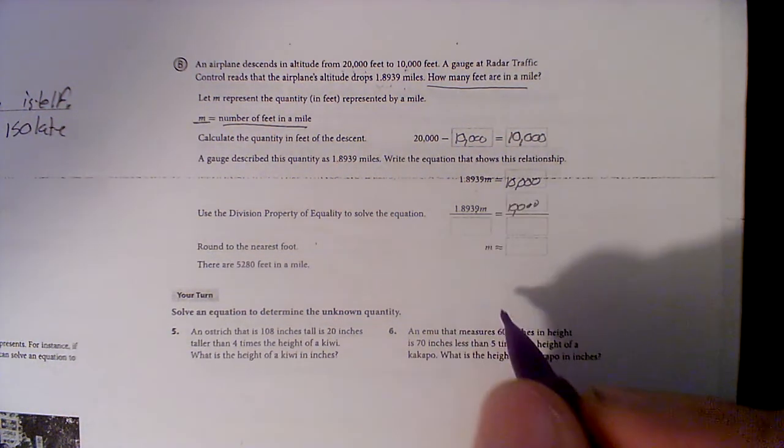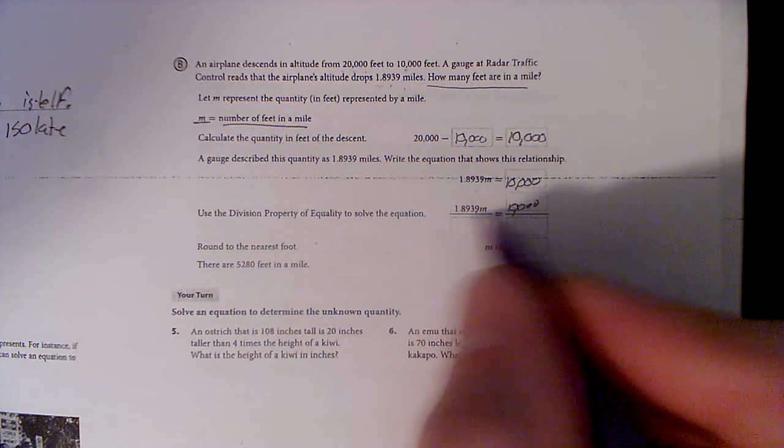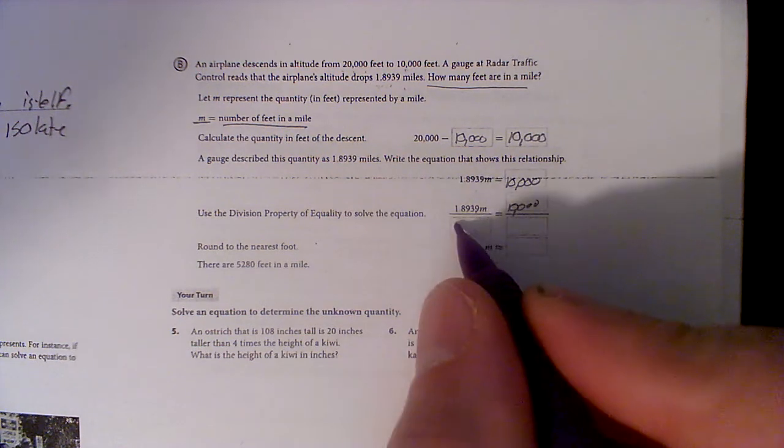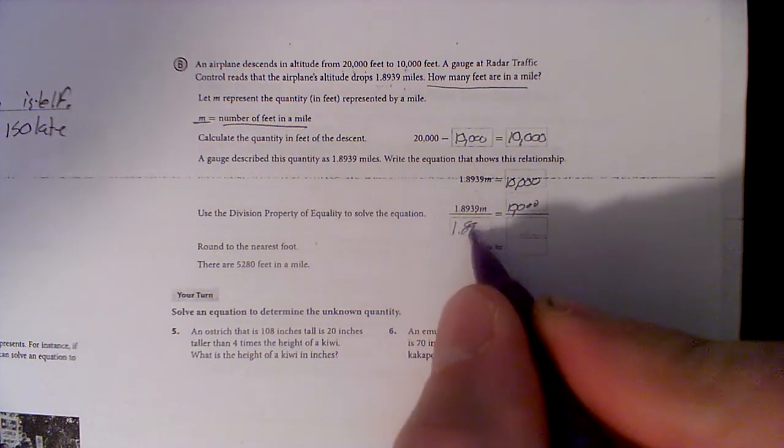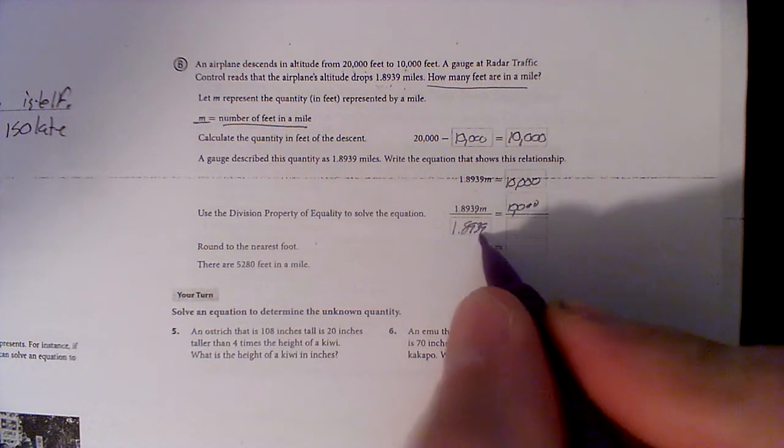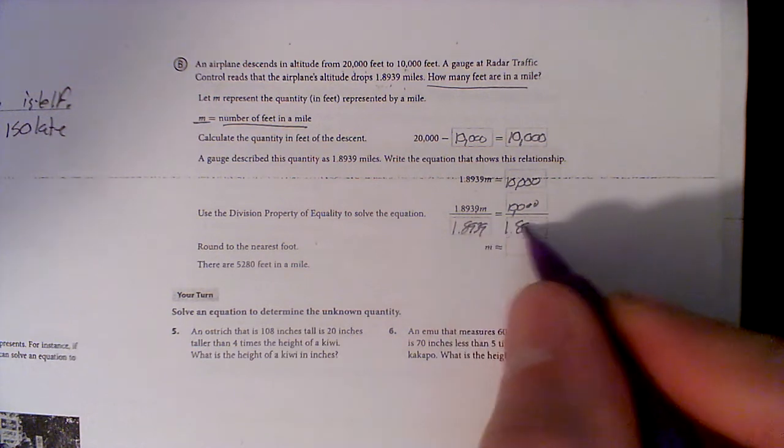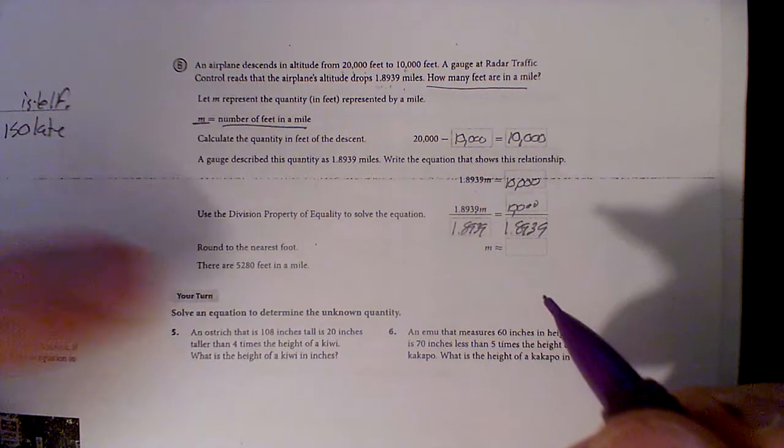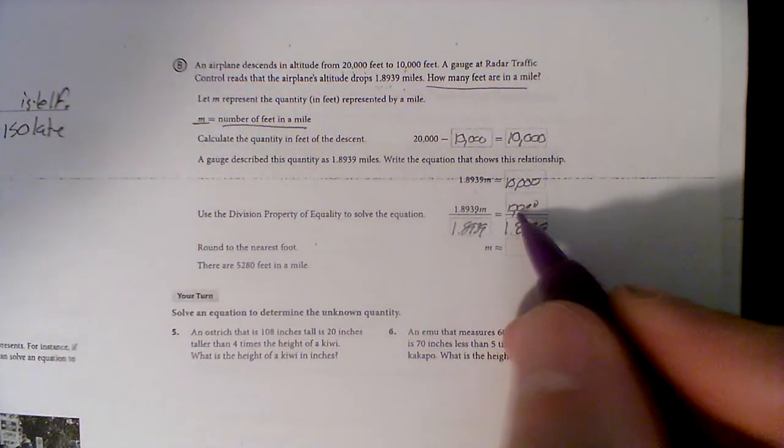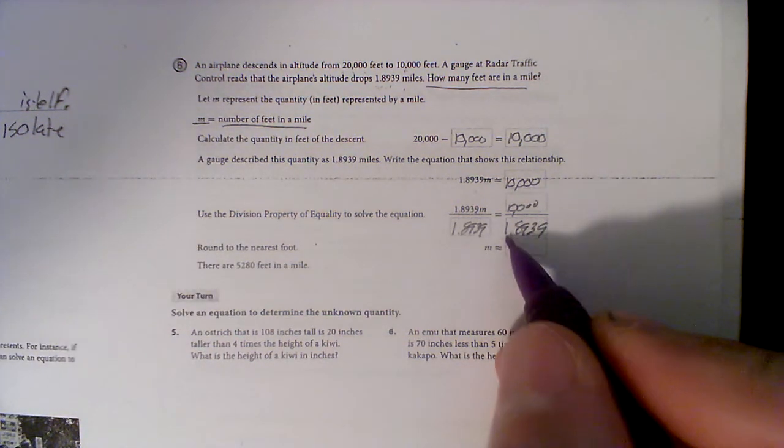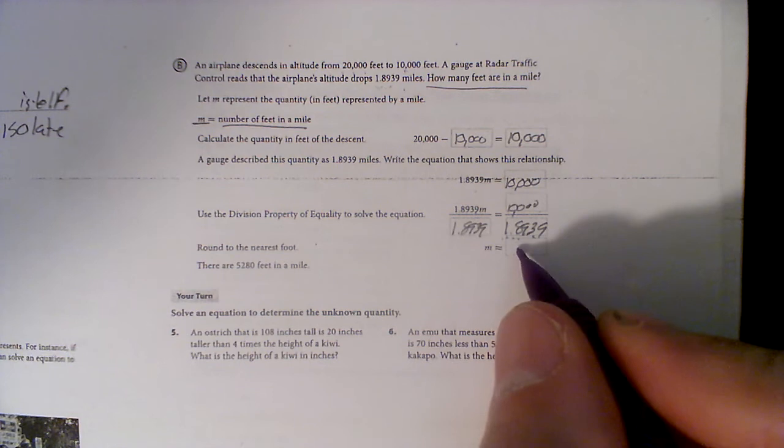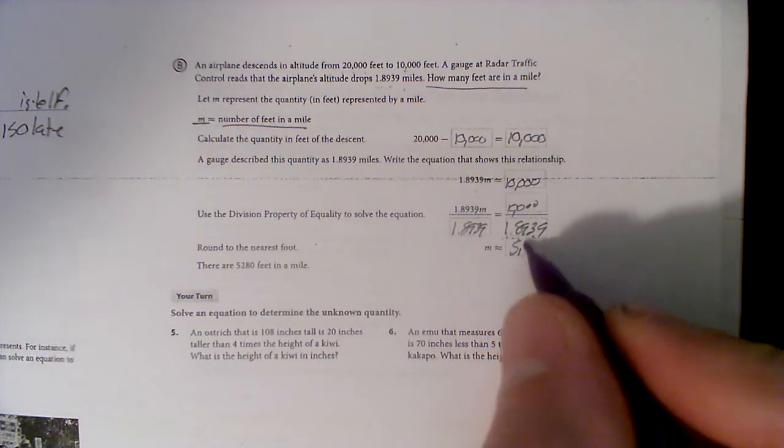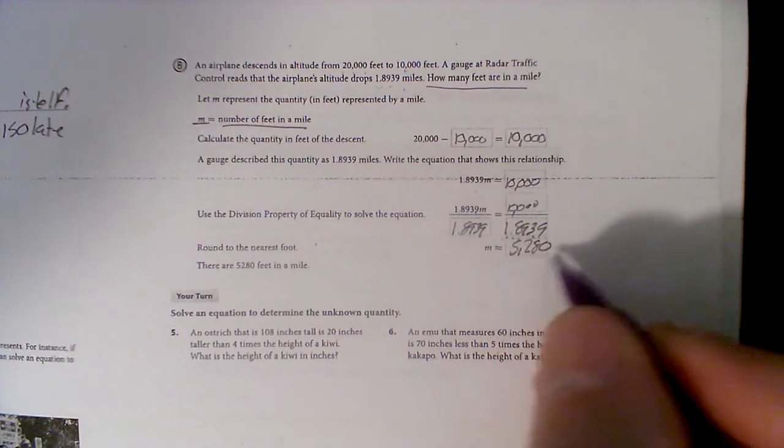So we know that 1.8939 miles is equal to 10,000 feet. And I want to get X by itself. Well, that says 1.8939 times X - that's multiplication - so we're going to divide by 1.8939 on both sides. I'm using a calculator.